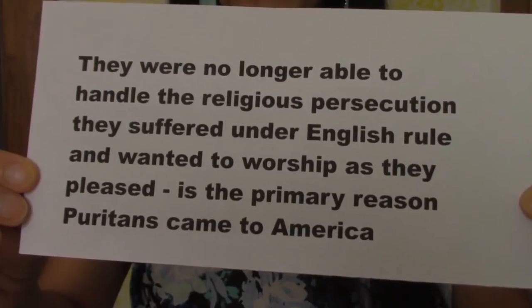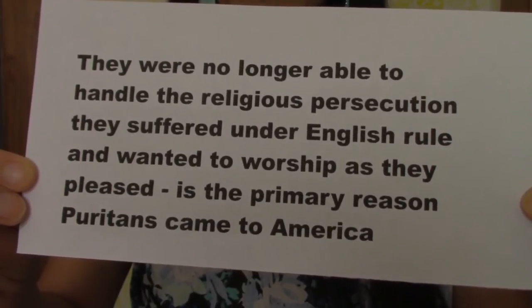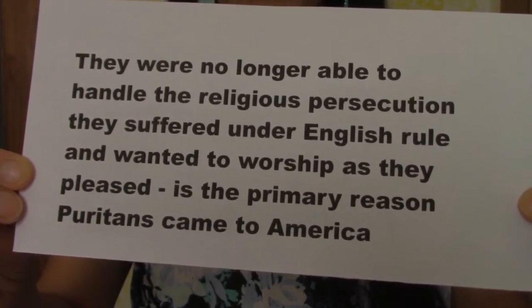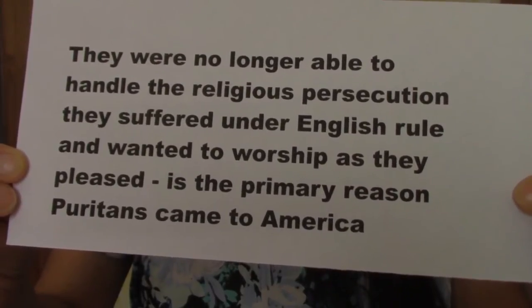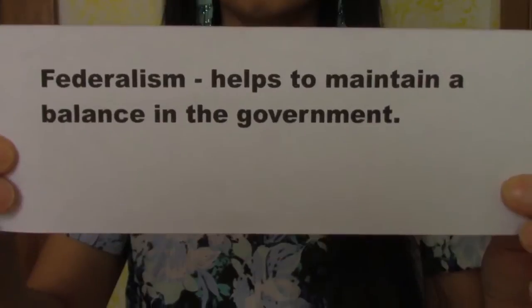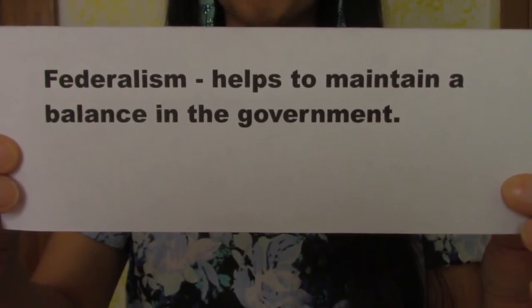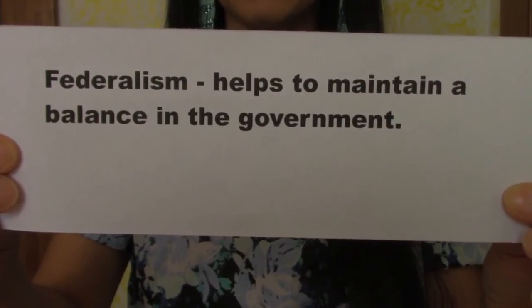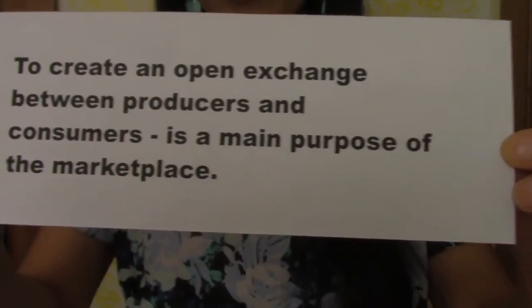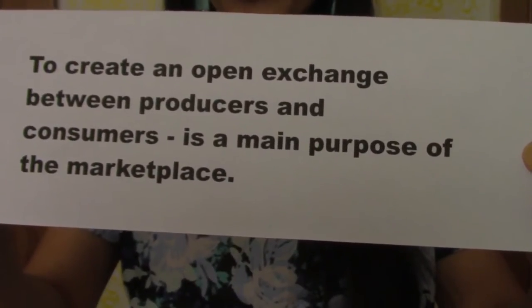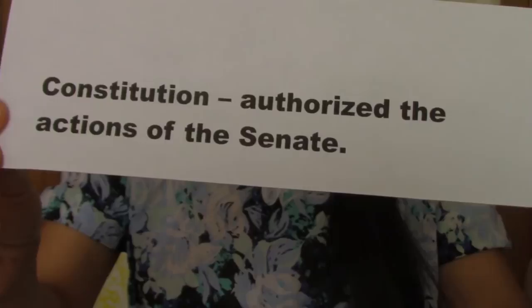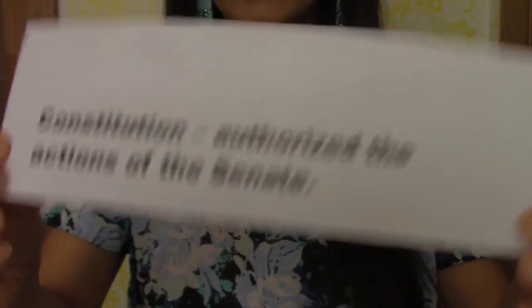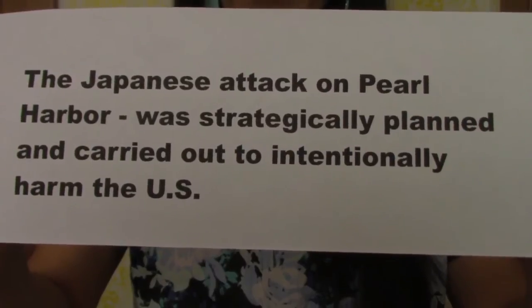The religious persecution they suffered under English rule, and wanting to worship as they pleased, is the primary reason Puritans came to America. Federalism helps to maintain a balance in the government. To create an open exchange between producers and consumers is the main purpose of the marketplace. The Constitution authorized the action of the Senate.